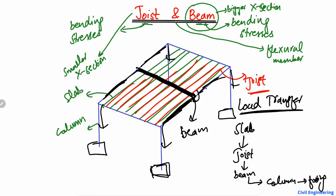So this is the load transfer mechanism in which the load is transferred from the joist to the beam. The load transfer from joist to beam is also one of the key differences between the joist and the beam.